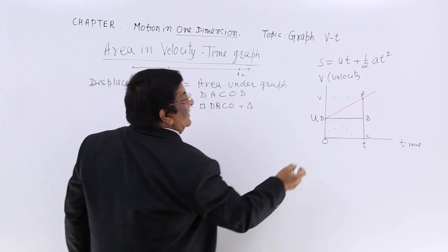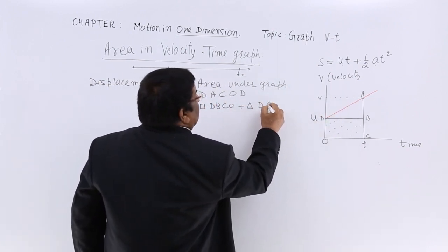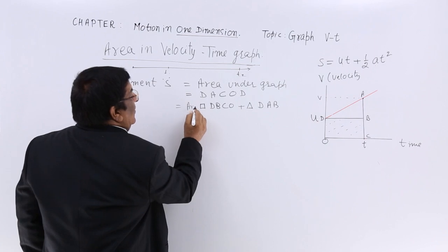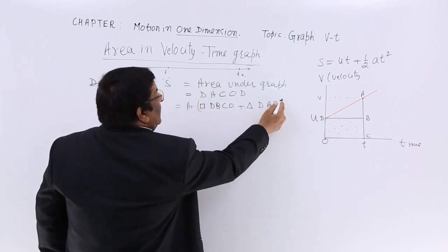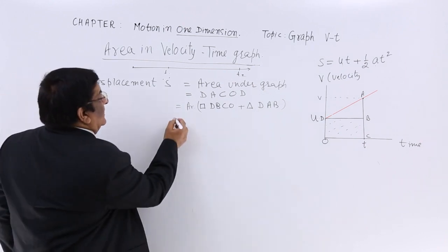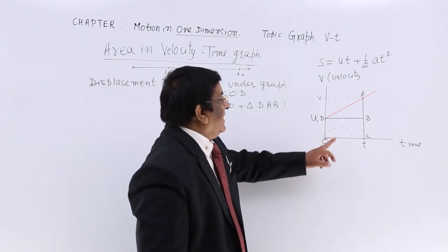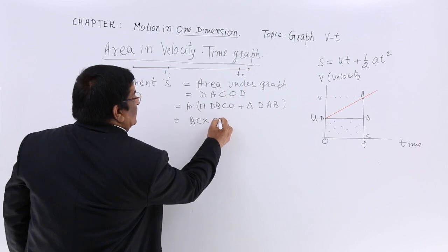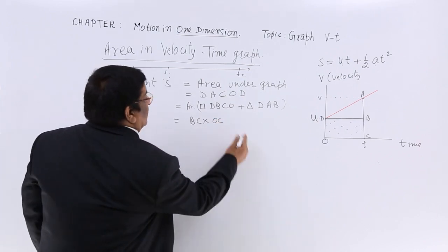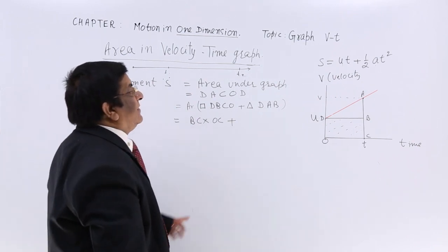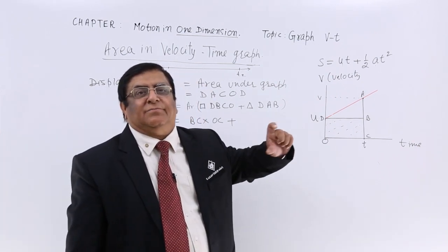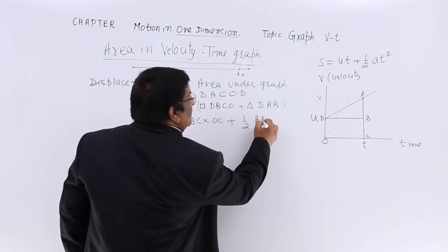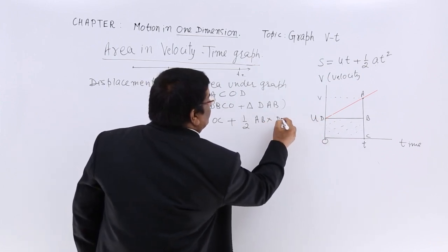Plus triangle, what is triangle - D, A, B. So area I should write here area of DBOC plus area of DAB. Let us calculate: DBCO is a rectangle. So area will be given by BC multiplied by OC. Plus triangle area is given by half height multiplied by base. We write that half AB multiplied by DB. Correct.